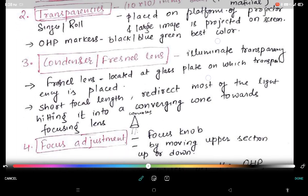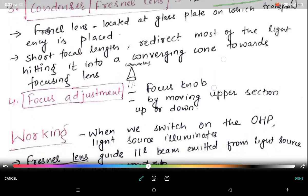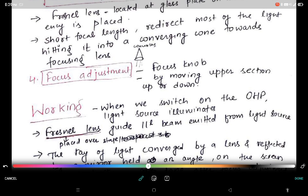Now condenser or Fresnel lens. As I have told that Fresnel lens is located on the glass plate on which the transparency is placed. It illuminates transparencies. Main function of Fresnel lens is to illuminate transparency. Many Fresnel lens have short focal length which redirects most of the light that is hitting it into a converging cone towards focusing lens.